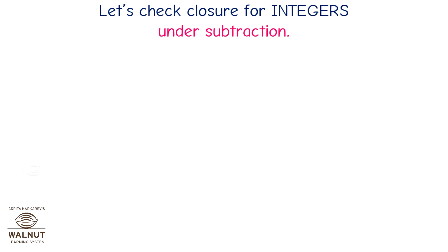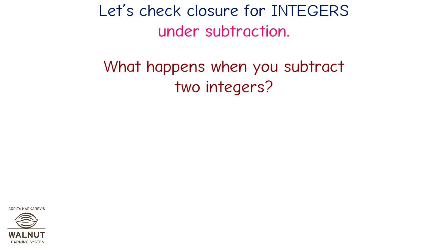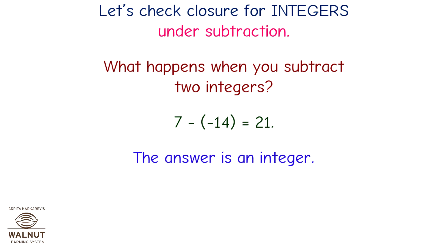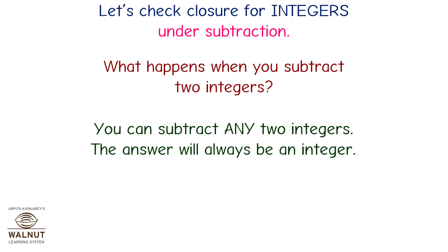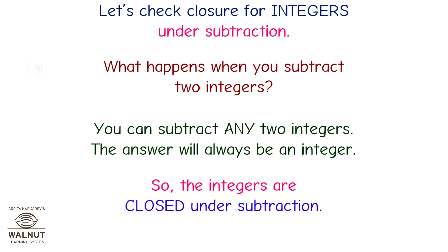Let's check closure for integers under subtraction. 7 minus minus 14 is equal to 21 — an integer. 0 minus 12 is equal to minus 12 — an integer. If you subtract any two integers, the answer will always be an integer. So integers are closed under subtraction.